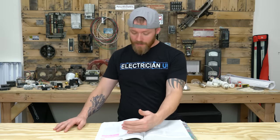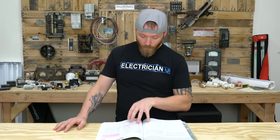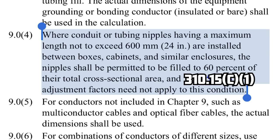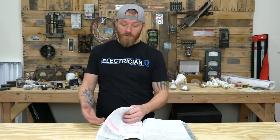Nipples allow you to go up to 60% area for your conduit fill, and you don't have to derate them. Looking at chapter 9, note 4 says: where conduit and tubing nipples have a maximum length not exceeding 24 inches and are installed between boxes, cabinets, and similar enclosures, the nipples shall be permitted to be filled to 60% of their cross-sectional area, and 310.15C1 adjustment factors need not apply. So you can put more conductors in a nipple, and you don't have to add any deratings.